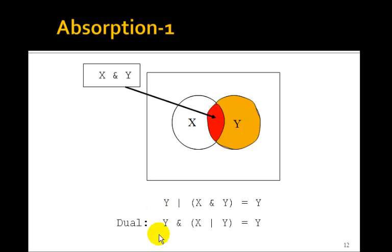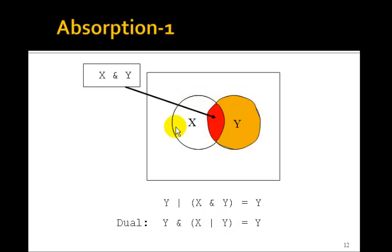Of course there must be a dual. If we change ORs to ANDs and ANDs to ORs, it must be true that y AND (x OR y) is equal to y. What's x OR y? That's all of both circles. y is all of y. The AND is the intersection, and the intersection with just y gives just y. So x OR y gets absorbed.